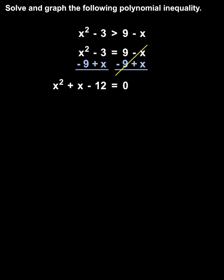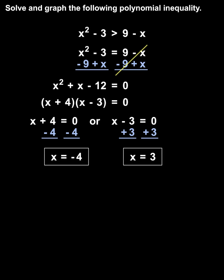Next, we factor the left side as the product of two binomials. Since the factors of negative 12 that add to positive 1 are positive 4 and negative 3, we have x plus 4 times x minus 3 equals 0. So either x plus 4 equals 0 or x minus 3 equals 0, giving us x equals negative 4 or x equals 3.